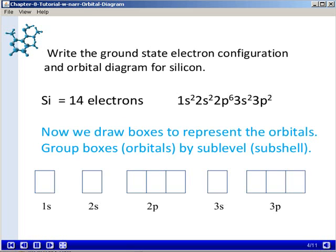And then we'll draw the squares or boxes to represent orbitals in our orbital diagram. We'll group them together by sublevel or subshell. So notice that all of the orbitals that are part of the 2p subshell, for example, are all attached, indicating that they're part of the same sublevel or subshell.